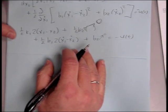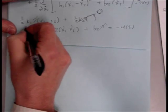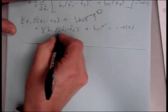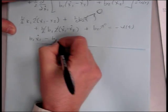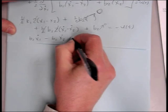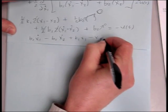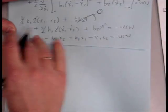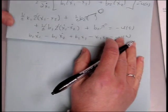And so we get one equation then. The 2s and the halves go away, so we have b1 x1 dot minus b1 x2 dot plus k1 x1 minus k1 x2 equals negative u of t. So this is our equation from our x1 application.